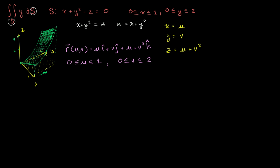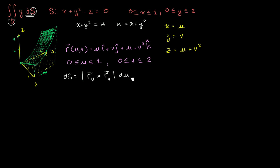Now that we've set up the parameterization, let's try to evaluate the integral. The next thing we'll do is essentially try to express ds in terms of du and dv. ds is going to be equal to the magnitude of the cross product of the partial of r with respect to u crossed with the partial of r with respect to v, du dv. So first, let's take the cross product, and we'll do that with a 3 by 3 matrix.